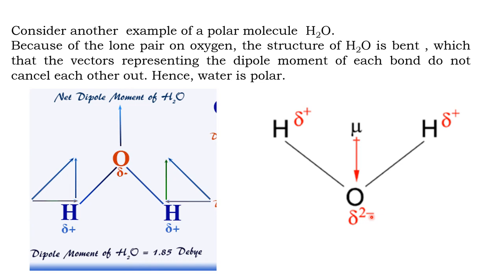In the O-H bond, oxygen is more electronegative, so the vector direction is towards the oxygen. With two vectors acting at a particular angle in the bent geometry, the net dipole moment is the vector sum — perpendicular to the axis of symmetry. That is why the water molecule has a net dipole moment, because its geometry is not linear but inverted V-shaped (bent).